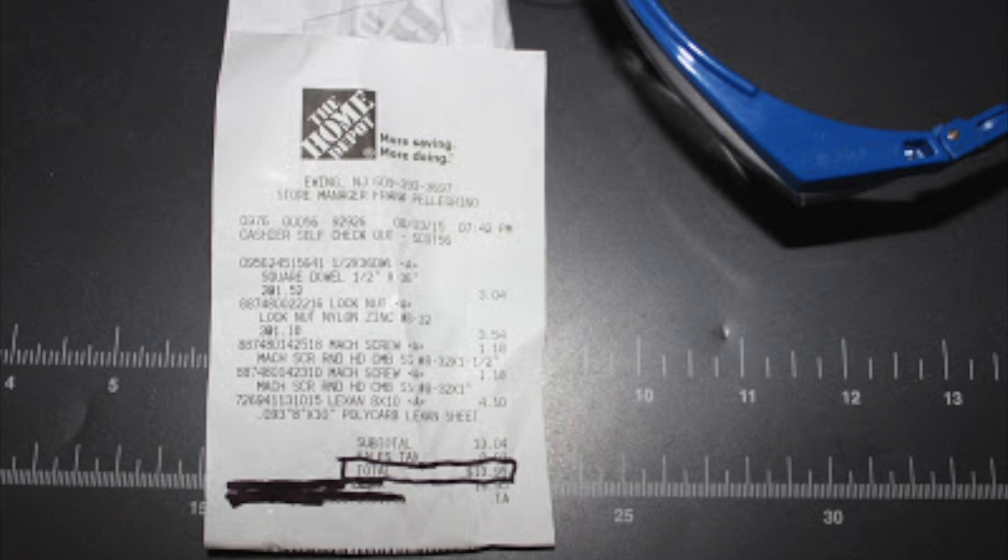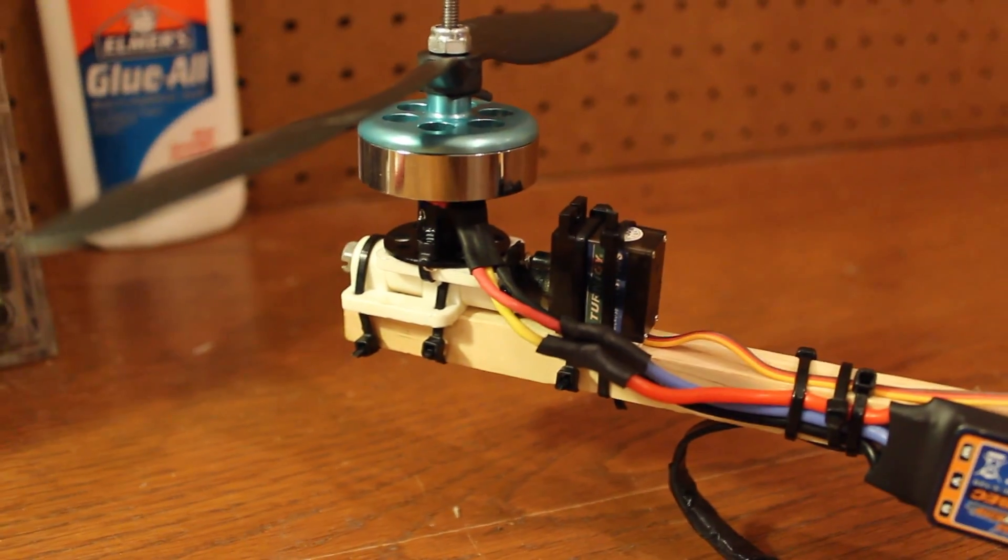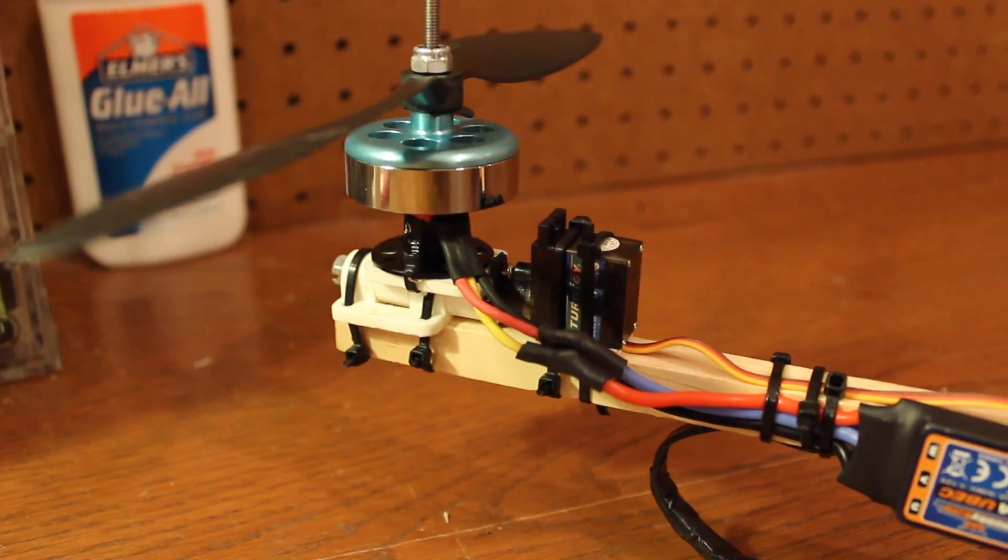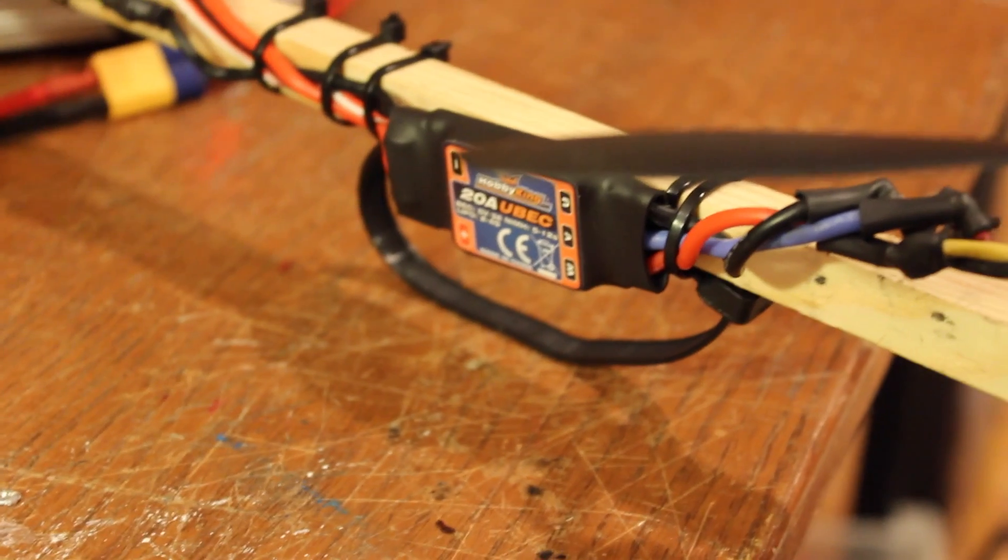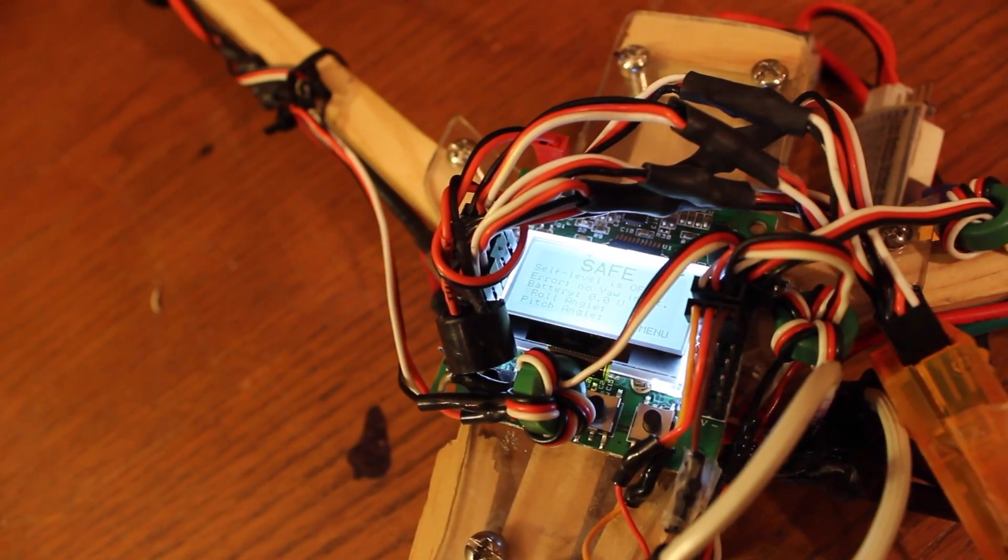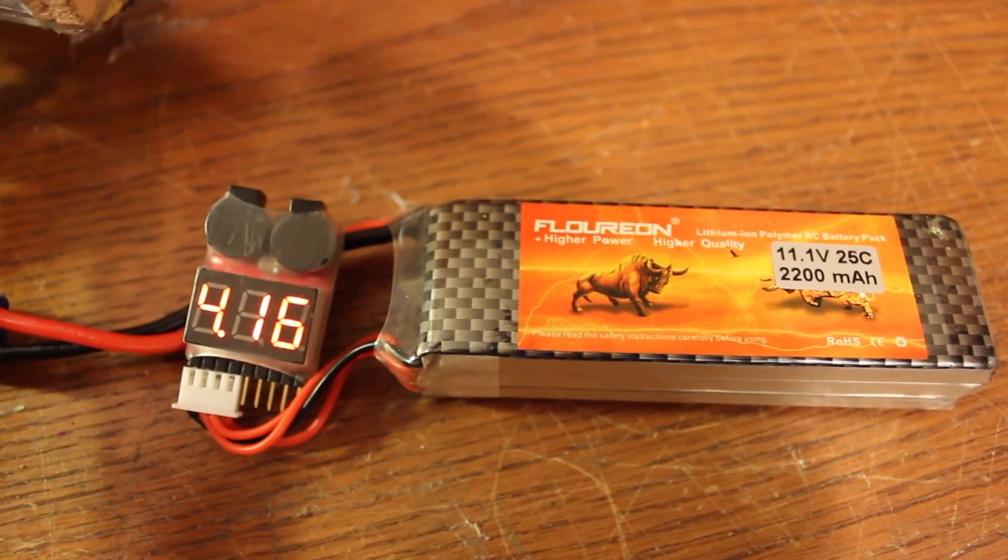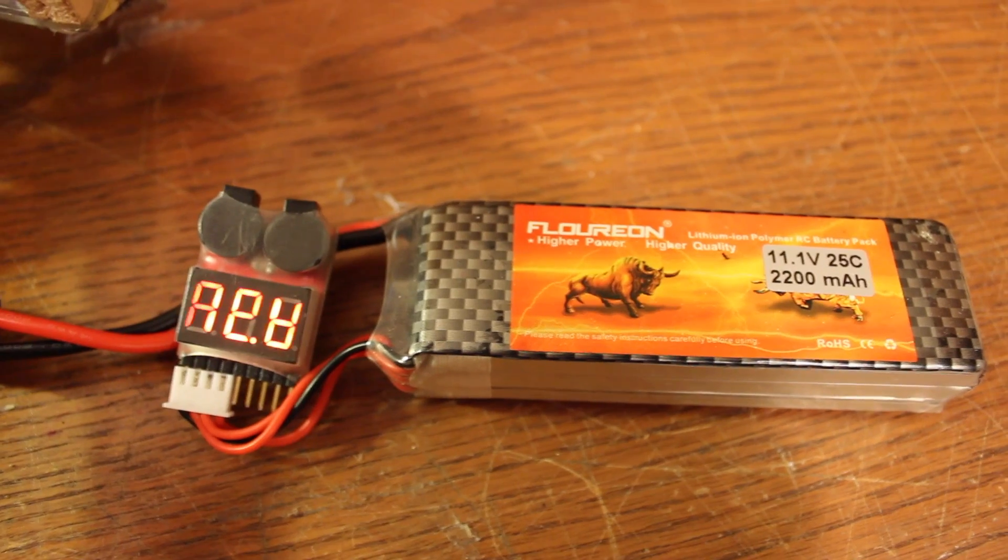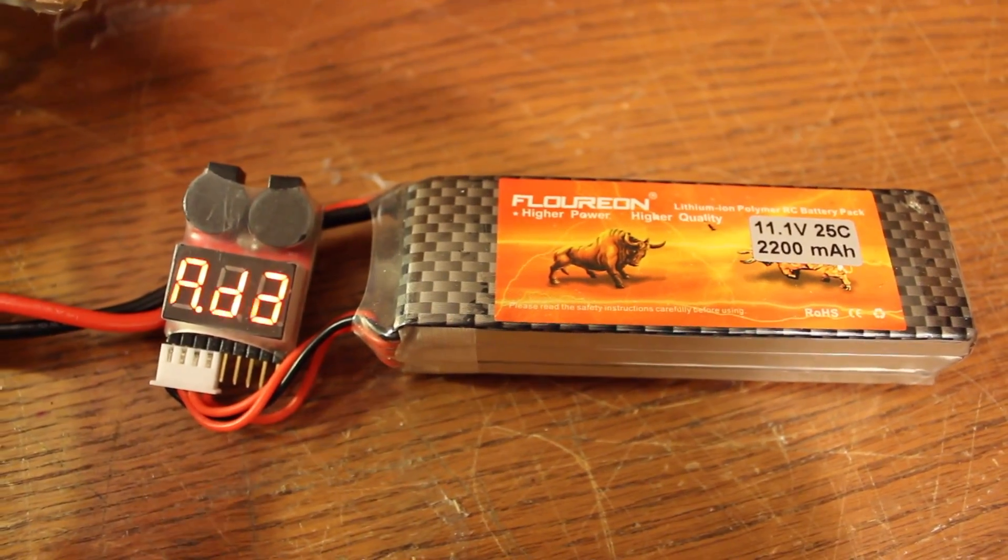Onto the electronics, the motors are Hextronic DT750s and they are running off of 20 amp ESCs from Hobby King. And the whole tricopter is controlled by a KK2 board. And all of it is powered by a 2200 milliamp hour battery running on 11.1 volts, three cells. And it has a little battery beeper that tells me when to land.